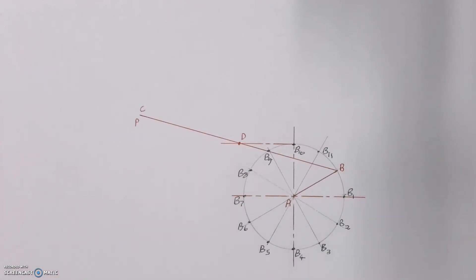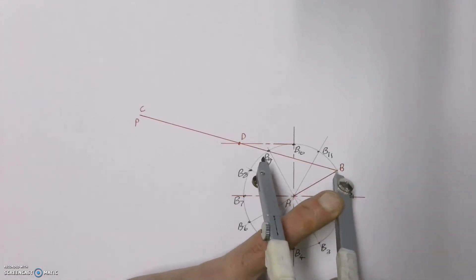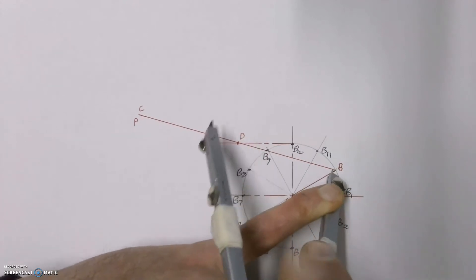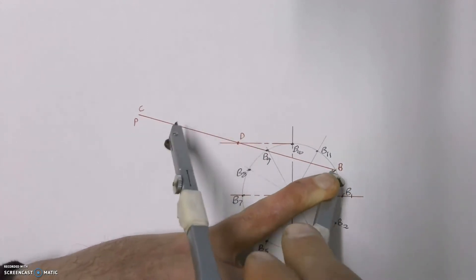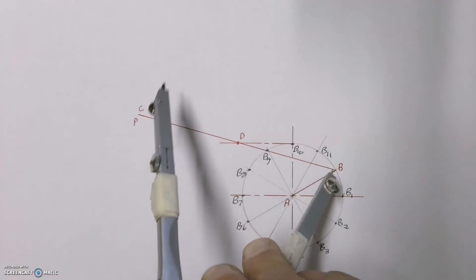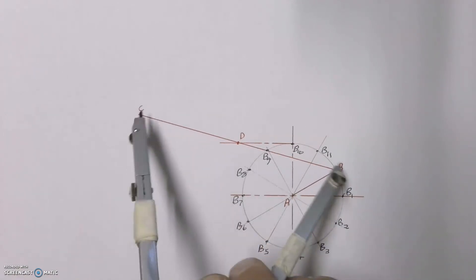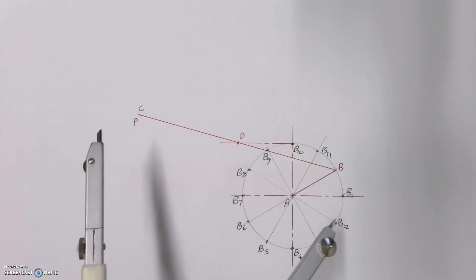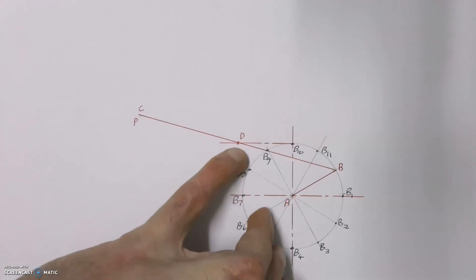We're going to take our compass and place it on the length of line BC and open it up to that length. For each of these points we're going to use that same length because BC is a metal rod, it can't change lengths as this mechanism moves around, but we know it's always got to pass through point D.